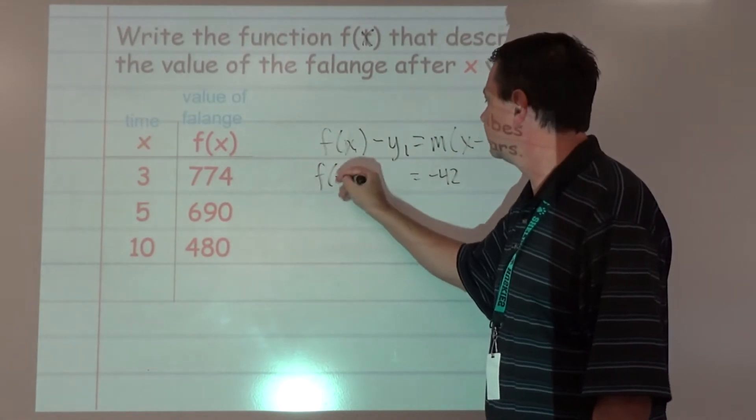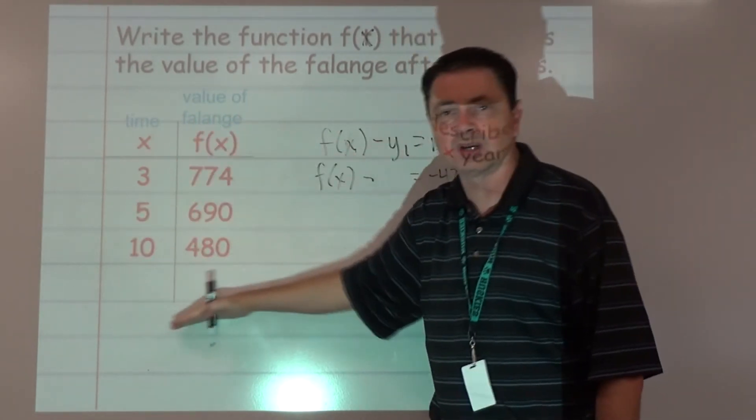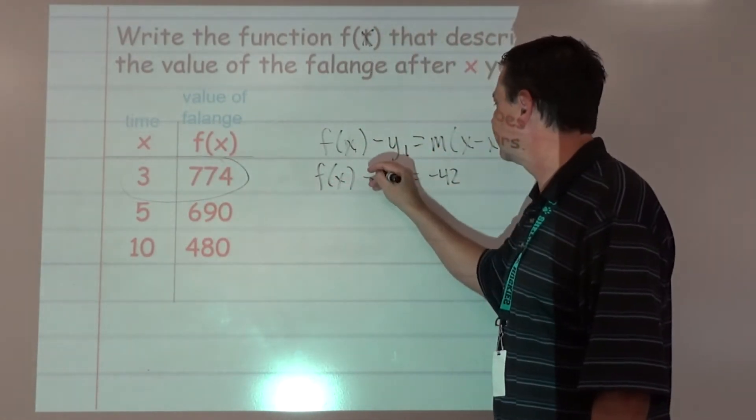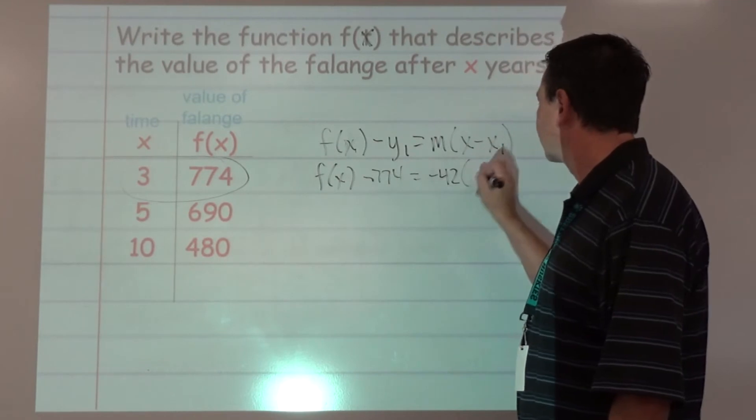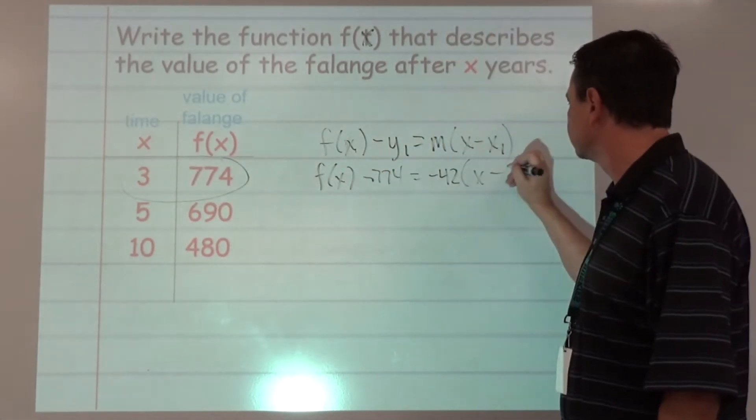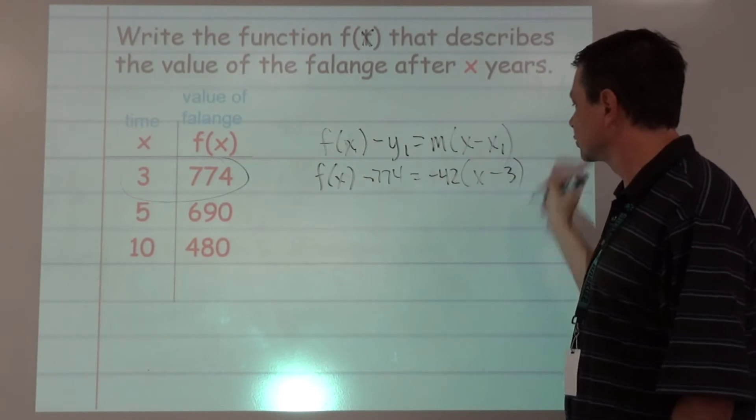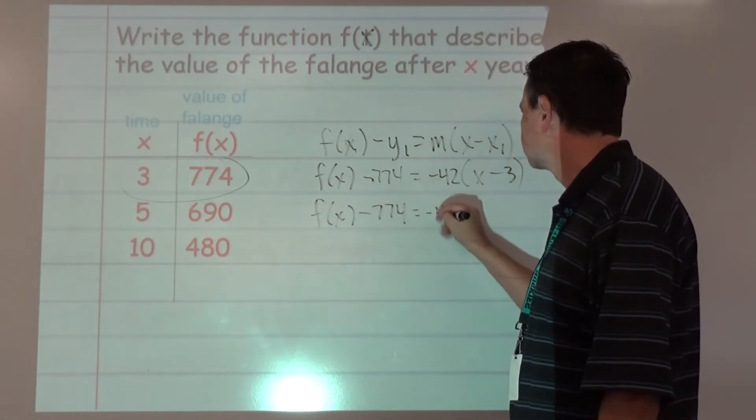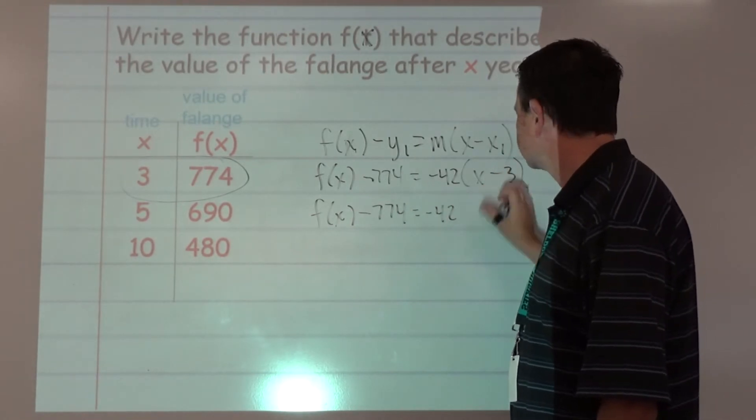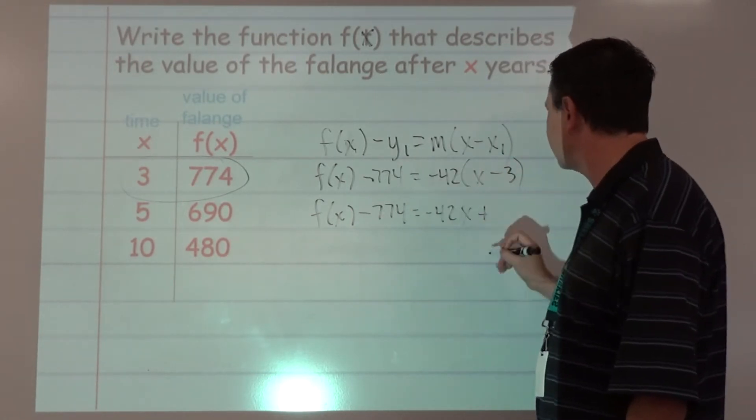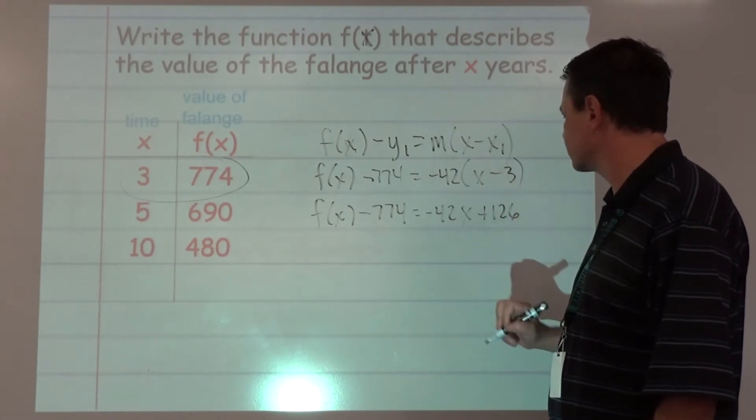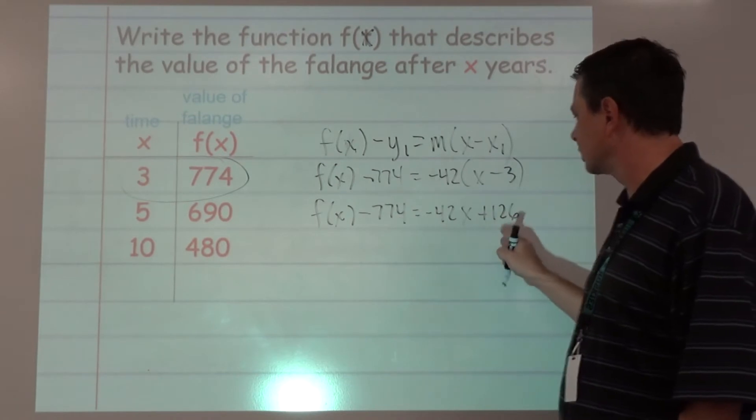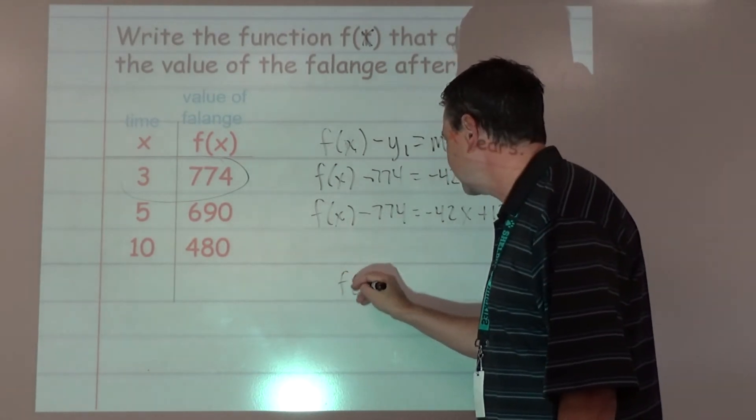f(x) minus - we can pick any one of these points. I'm going to go right there, so the y-coordinate is 774. x minus 3. Need to distribute. So multiply those and we get plus 126.